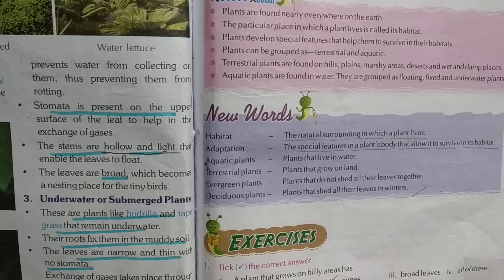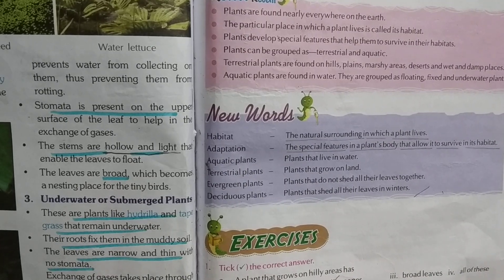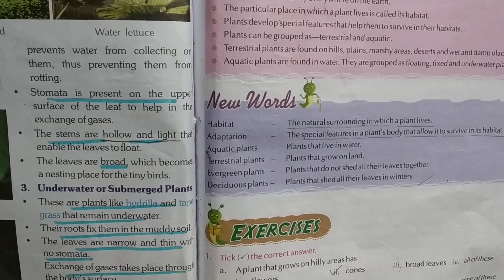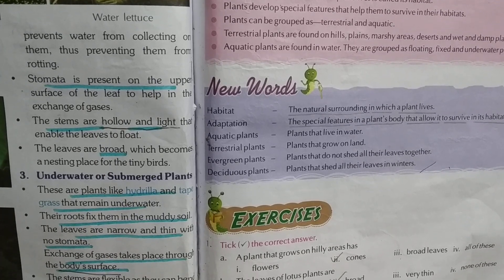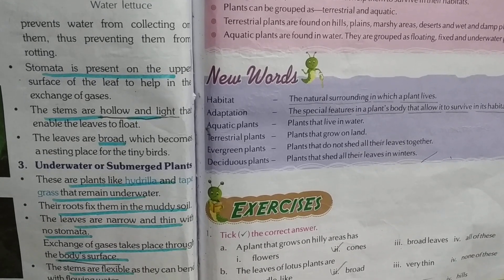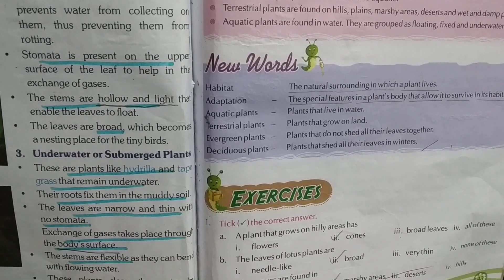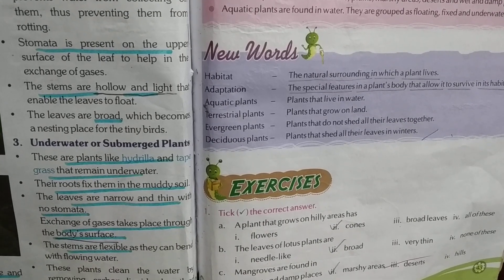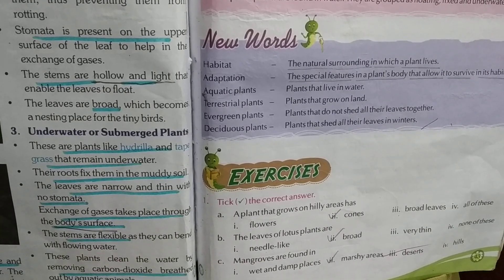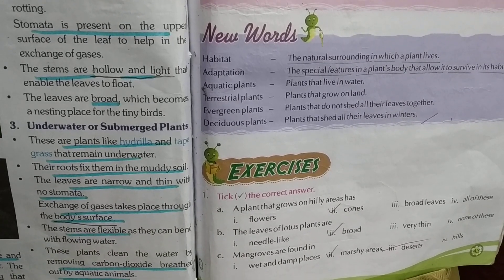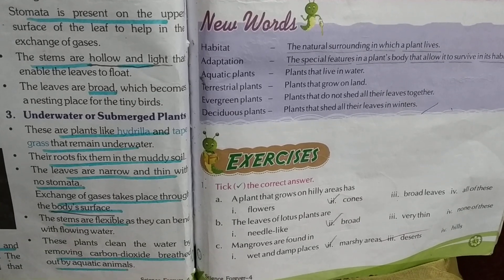The stems are hollow and light, which enables the leaves to float. The leaves are broad and become a resting place for tiny birds.